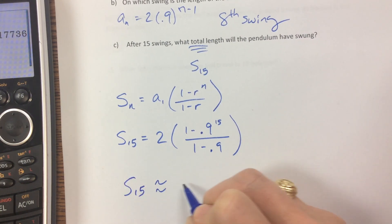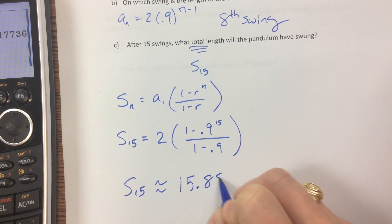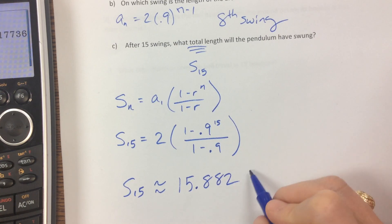And I find that the sum total is about, sum of 15 swings, is about 15.882 feet.